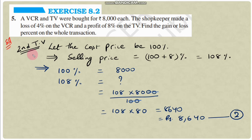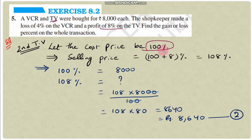Now for the TV: let cost price = 100%. Since there is an 8% profit, selling price = 100 + 8 = 108%. Cost price of TV is also 8000 rupees, so 100% = 8000 rupees. The TV is sold at 108%.